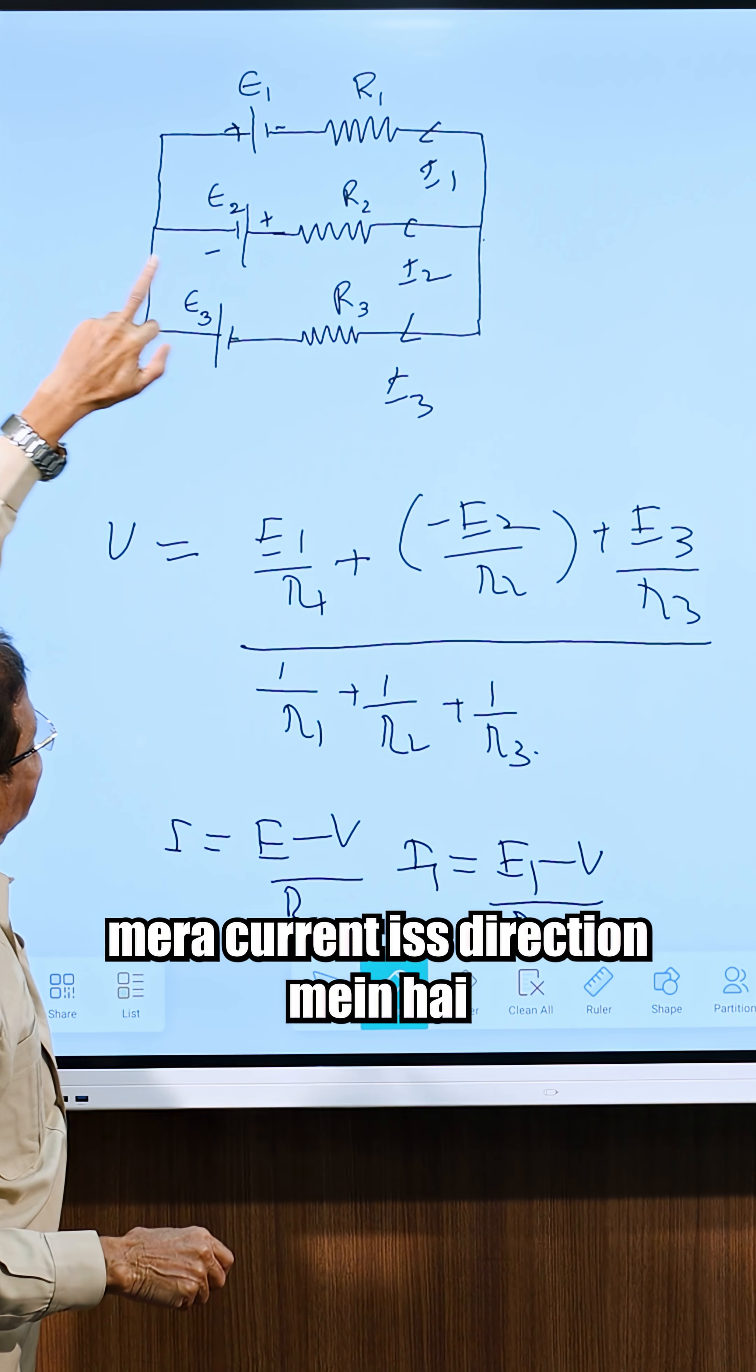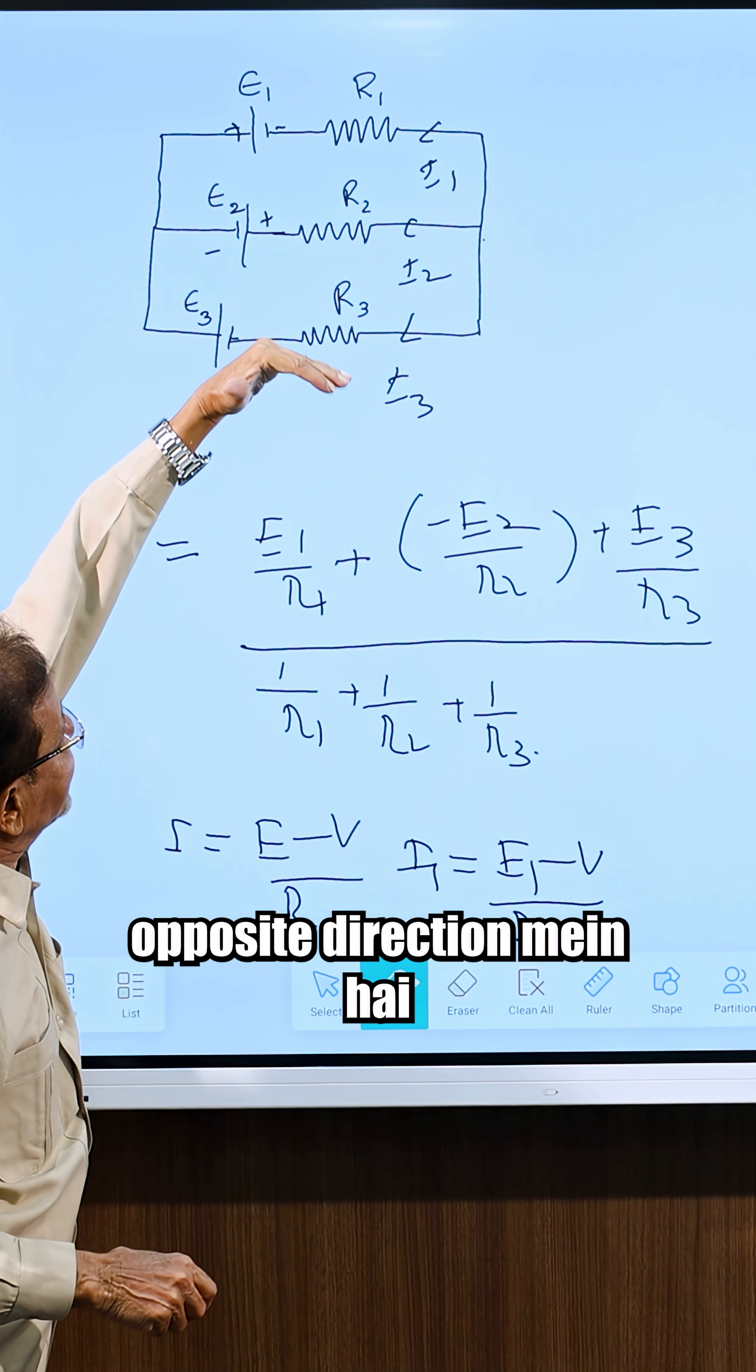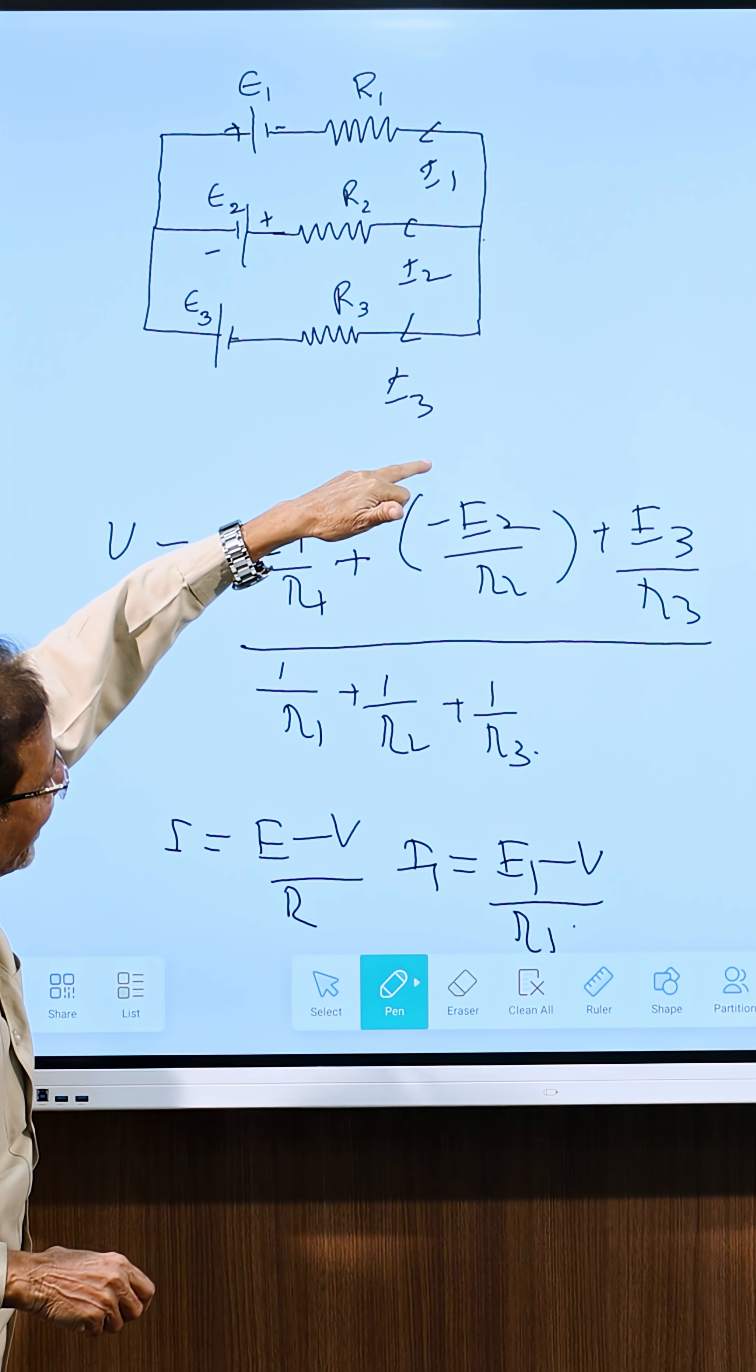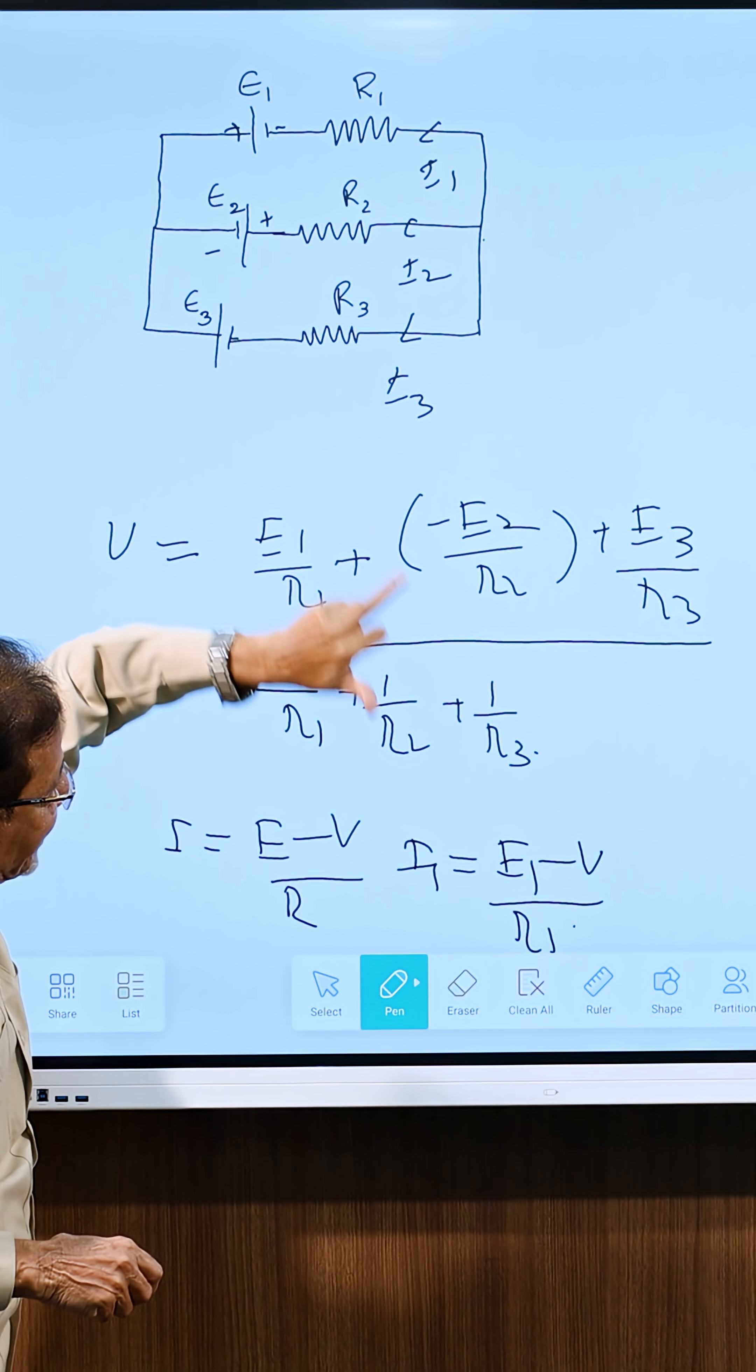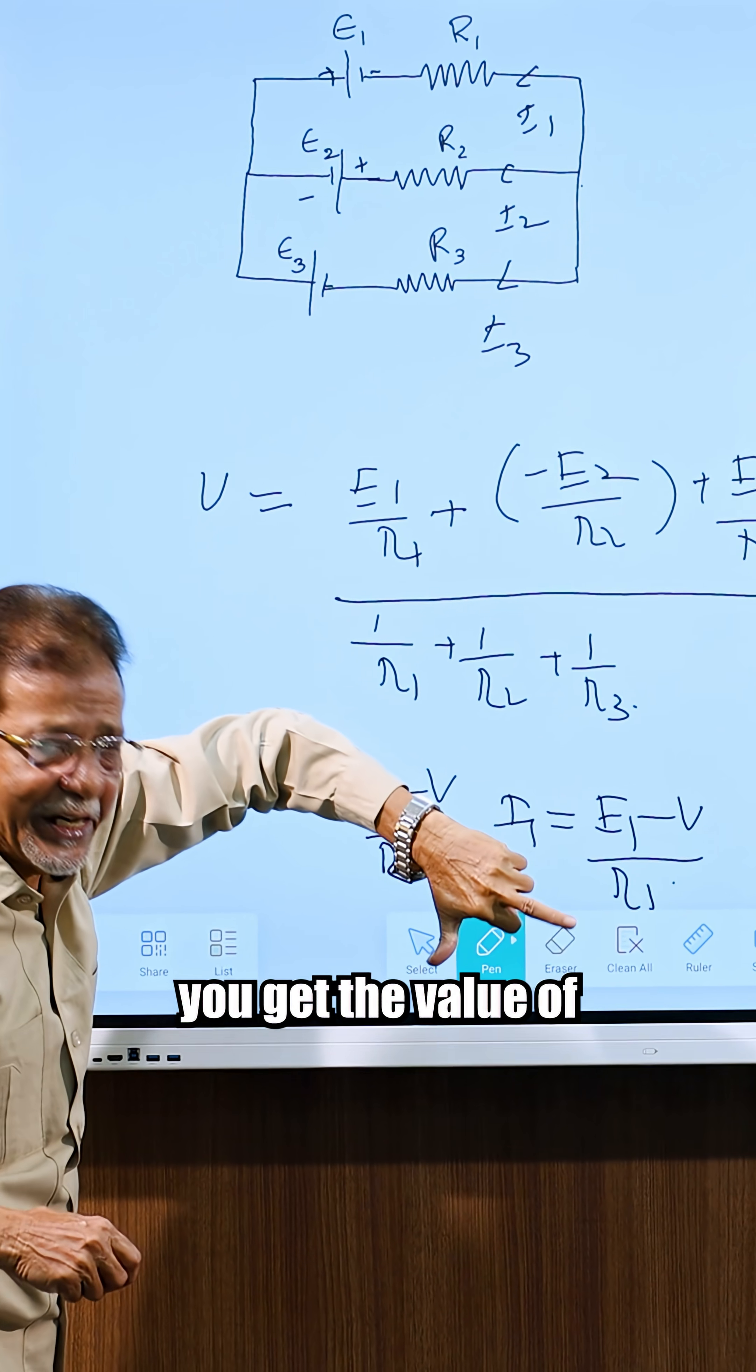Second case, my current is in this direction. But battery current is in opposite direction. So E2 value is negative. Minus E2 upon R2 plus E3 is again positive. E3 upon R3 divided by 1 upon R1 plus 1 upon R2 plus 1 upon R3. You will get the value of common potential that is V.